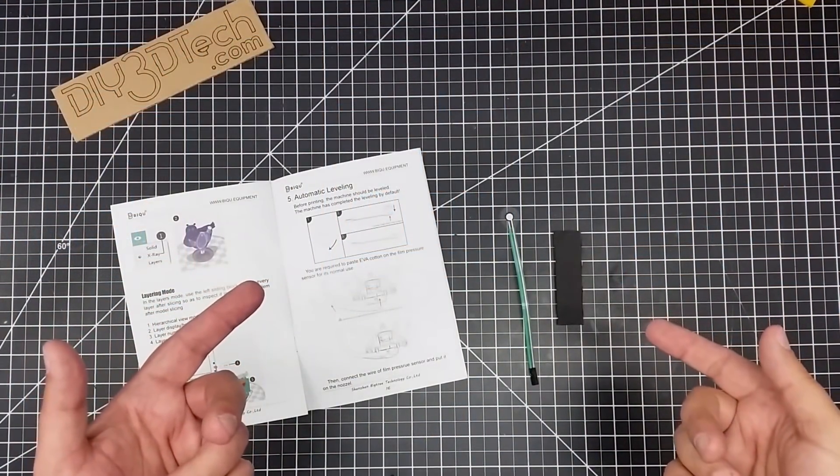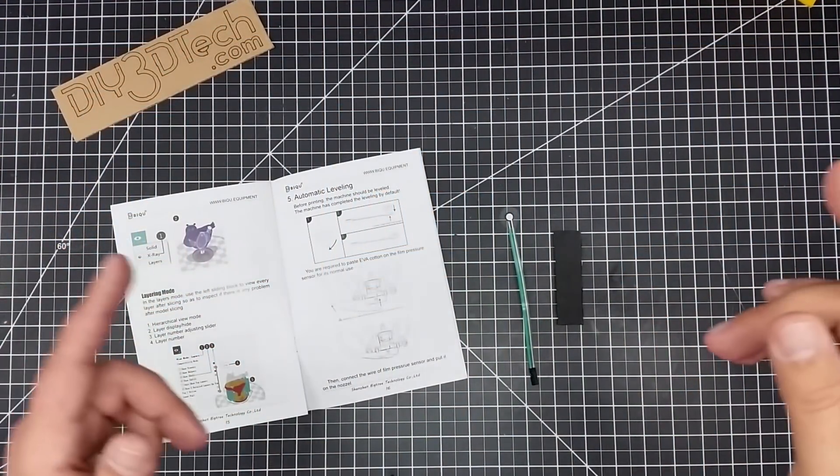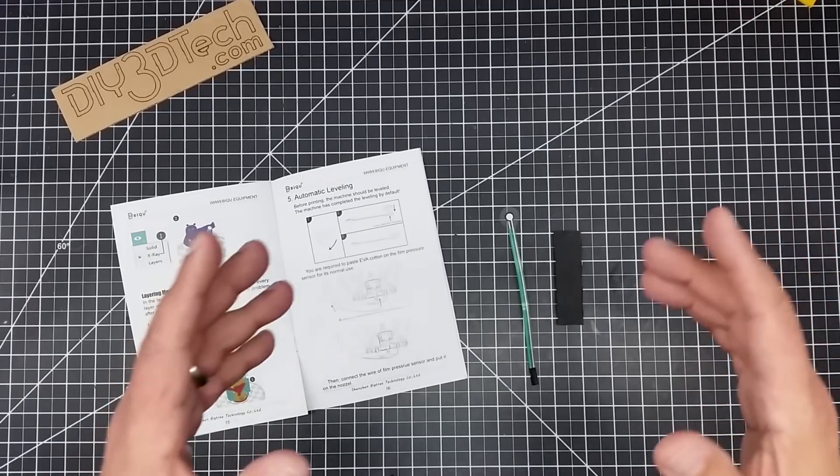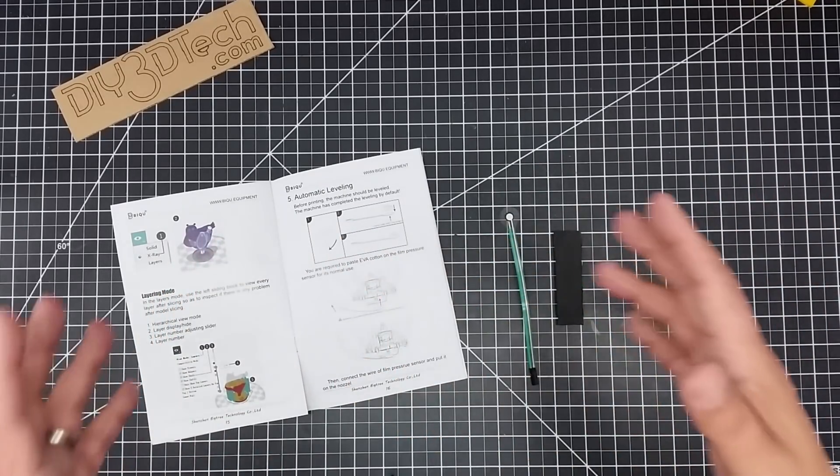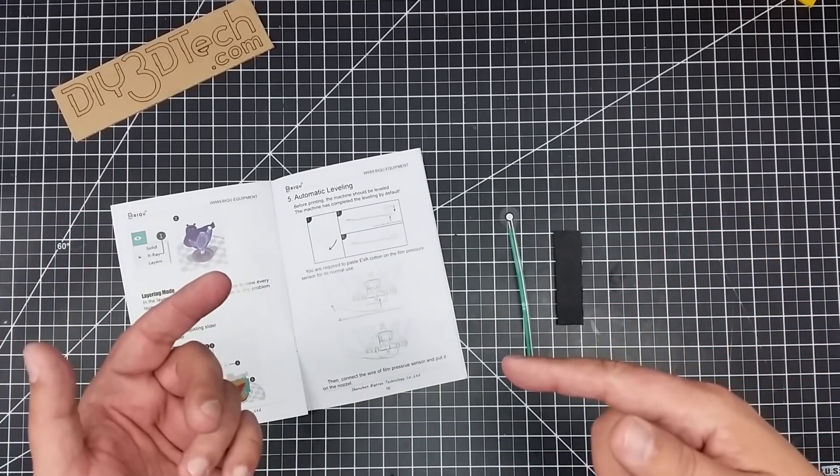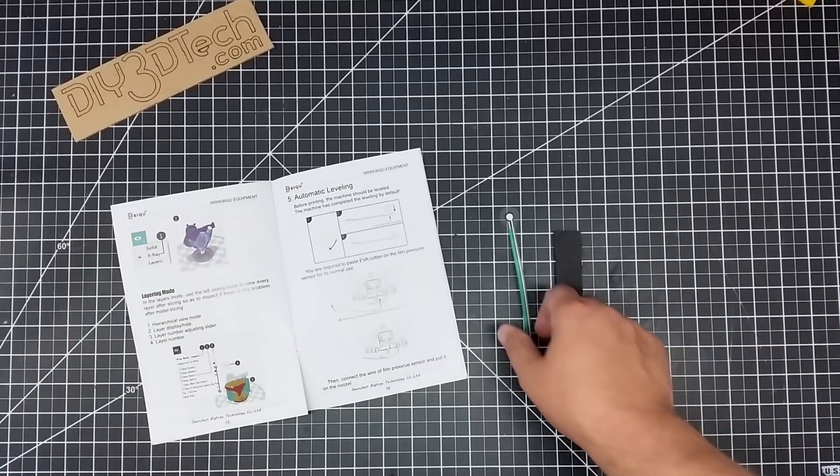Welcome to this episode of DIY3DTech.com. In this episode we're going to be taking a look at how to set up the auto leveling on the BIQU Delta printer that we unboxed a little while ago.